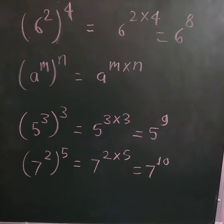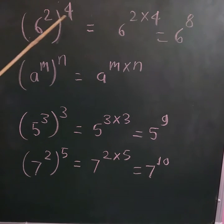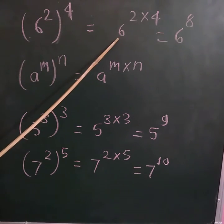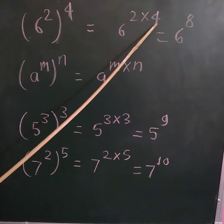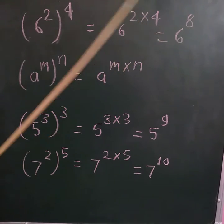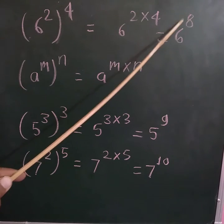See here, the given example is 6 raised to power 2, whole raised to power 4. So how to solve this? 6 raised to power 2, whole raised to power 4, equals 6 raised to power 2 multiplied by 4. Now 2 multiplied by 4 is equal to 8, so it comes as 6 raised to power 8.